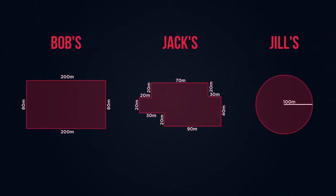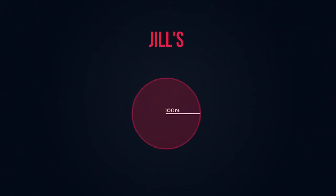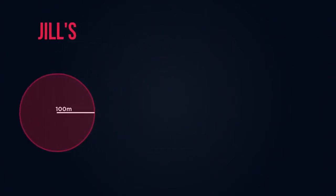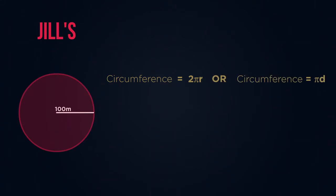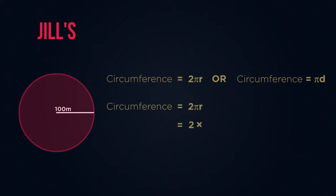The final field fence we need to work out is for Jill. Jill's farm is different — for the perimeter we still need to measure the length around it, but circles only have one side. Do you remember that the perimeter of a circle is known as a circumference? Do you remember the equation: 2π radius or π diameter? Whichever one you prefer. Pause the video and work out the circumference of Jill's field. Did you get 628 metres for the amount of fence Jill needs?